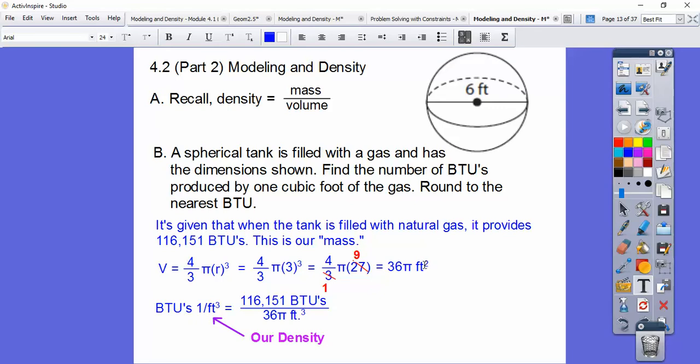So the BTUs per one cubic foot is going to be, this is when the tank is full, how many BTUs it has. And this is our volume, so we divide it to find how much we can get for one cubic foot. So that's our density question that they're asking. So I get about 1,027 BTUs per cubic foot right there.